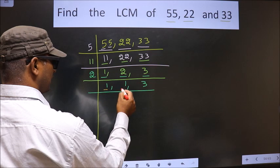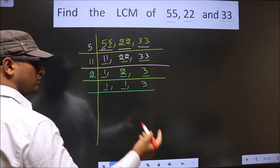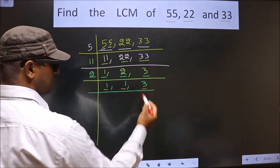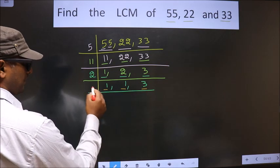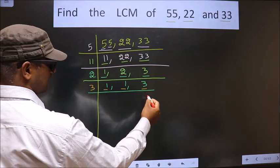Now we got 1 here and here. So focus on the other number, that is 3. 3 is a prime number, so we take 3 once 3.